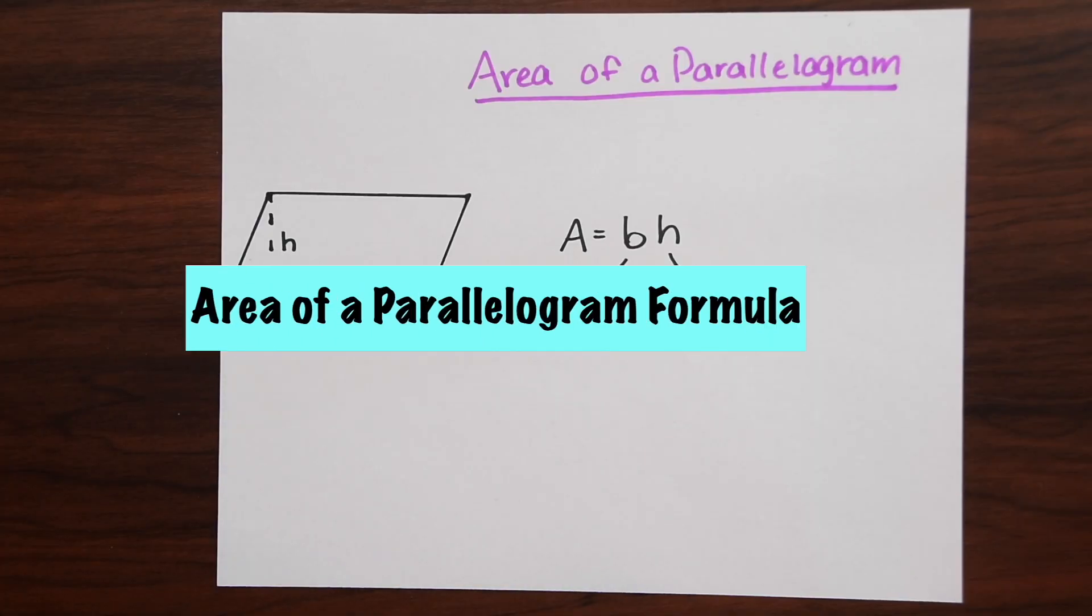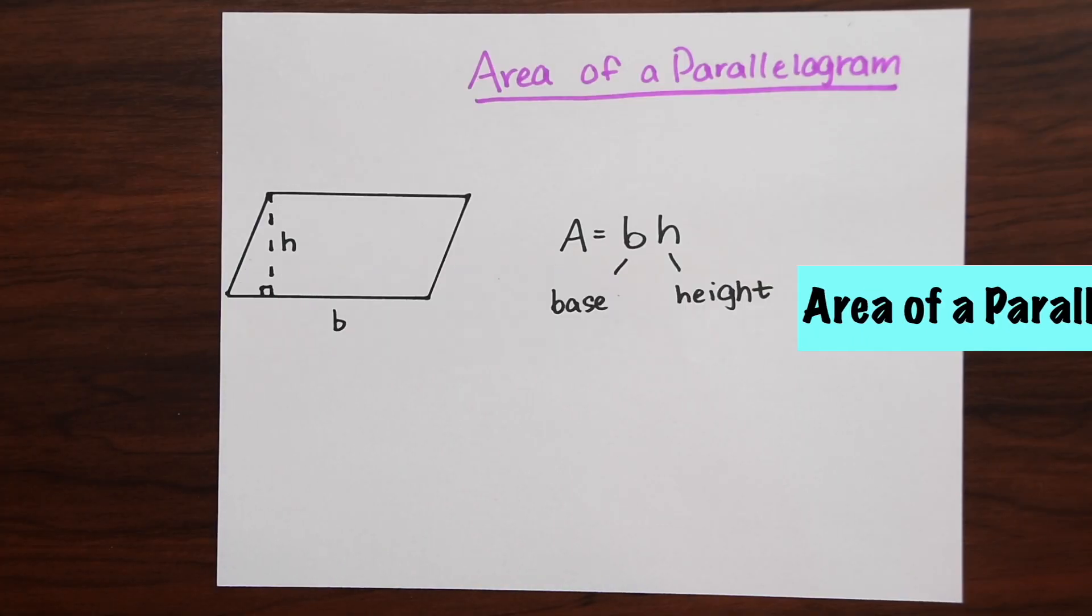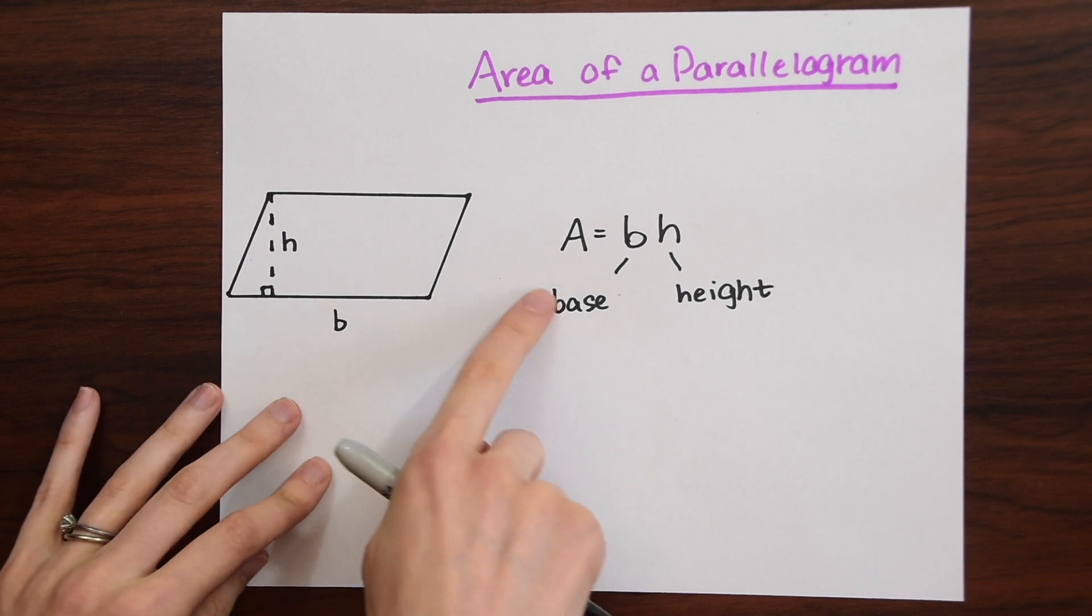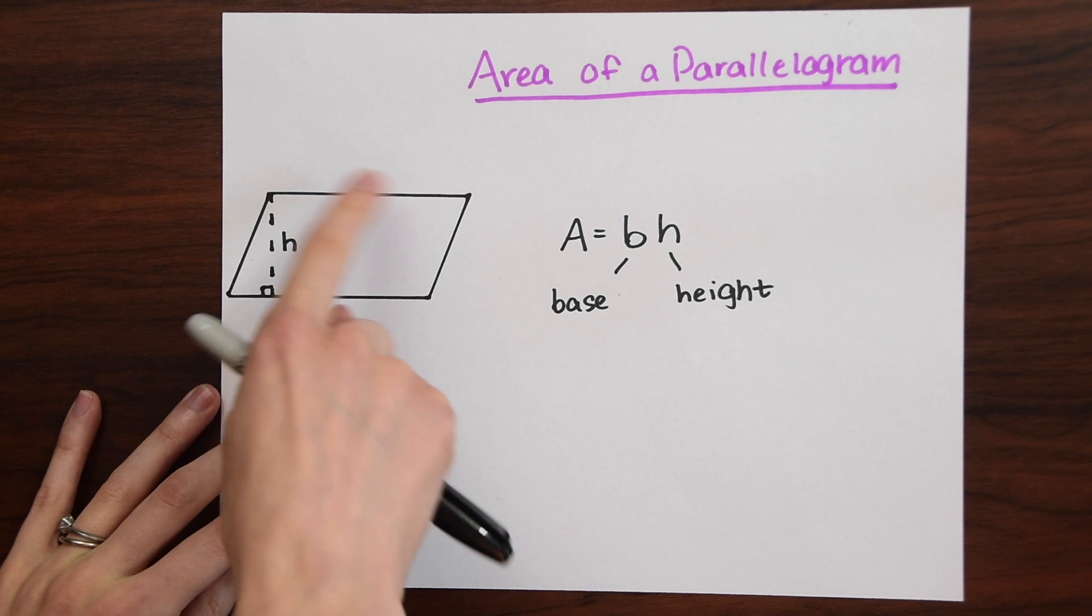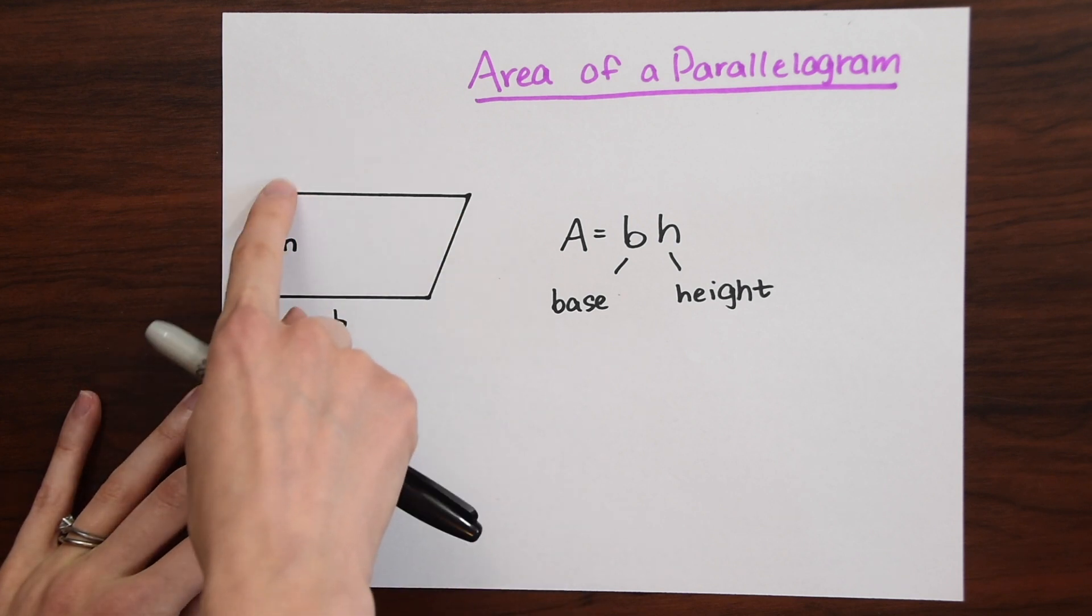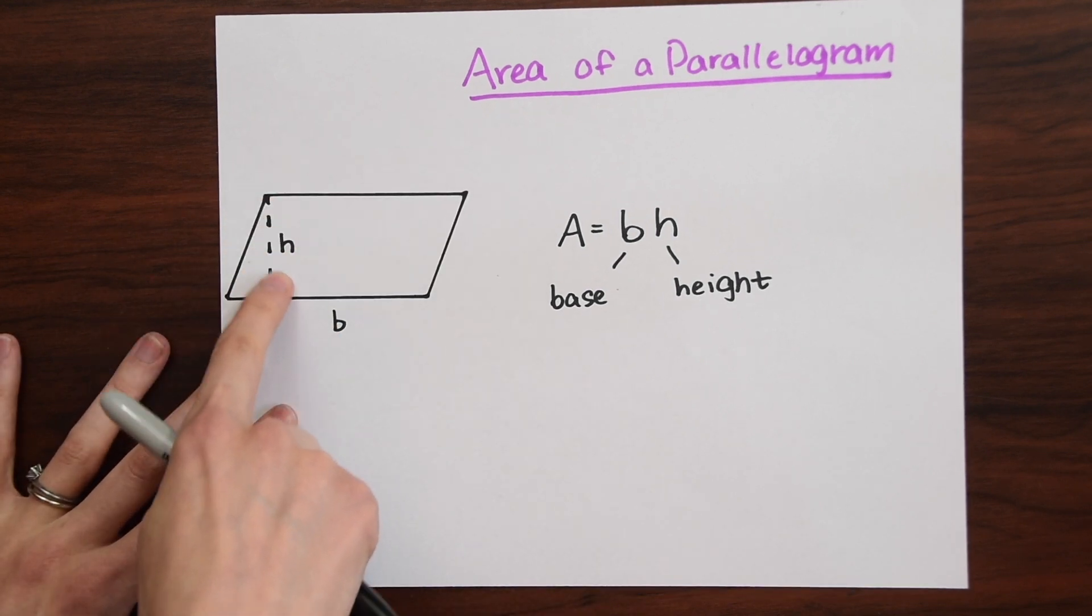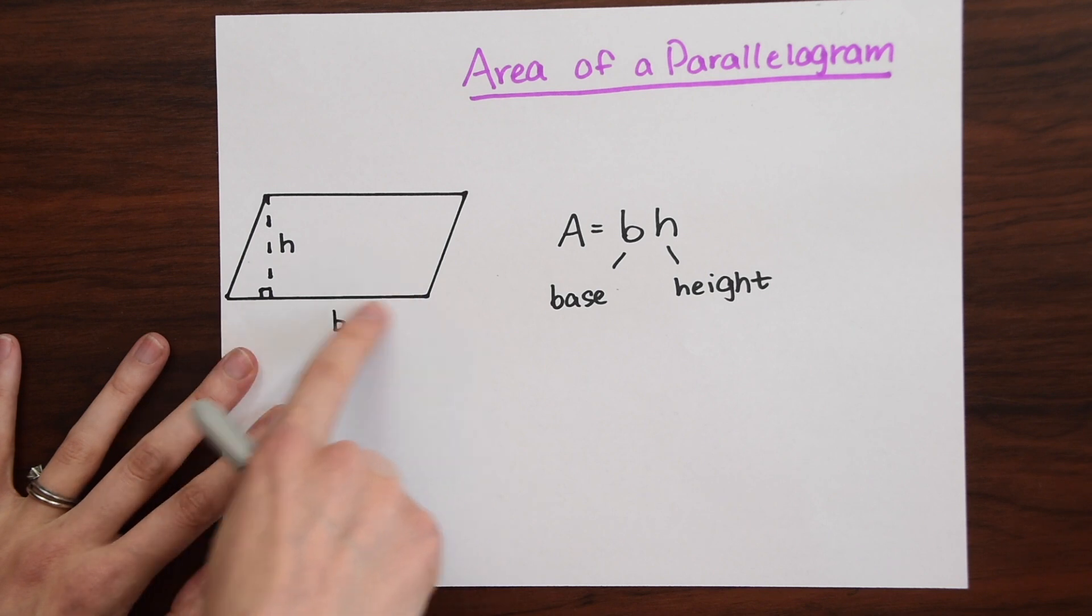So first just a little review of what area of a parallelogram is. We have a formula here and here's our parallelogram. We have two parallel sides this way and then we have another pair going this way. What we have here we have labeled the height h and then down here is the base.